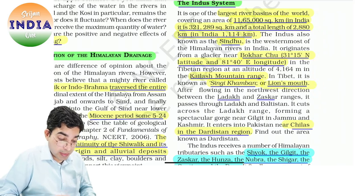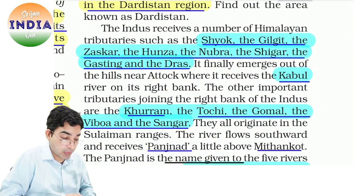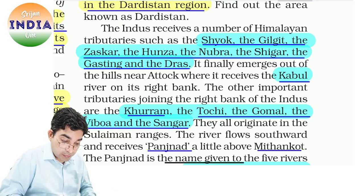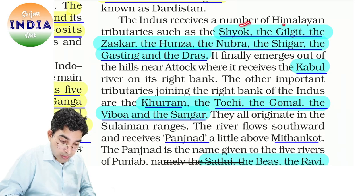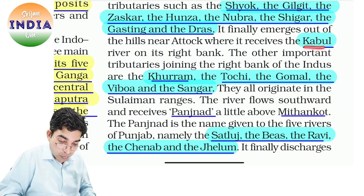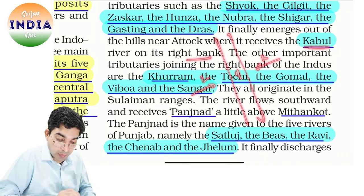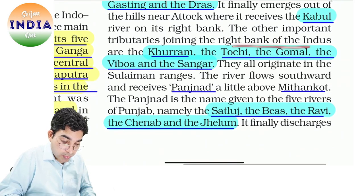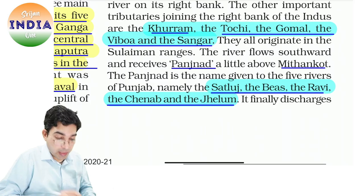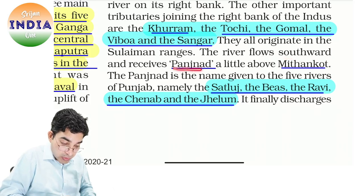Ek paragraph mein kitna saara content hai aur isse kitne MCQs ban sakte hain — NCRT bahut concise aur content rich hai. Indus receive karti hai Himalayan tributaries — Shyok, Gilgit mein, Zaskar, Hunza, Nubra, Shigar, Gasting aur Drass. Finally ye emerge karti hai, Attock pe receive hoti hai Kabul river — right bank mein. Banks bhi pata hai — right bank idhar se hai to left bank udhar. Other important tributaries joining the right bank: Khurram, Tochi, Gomal, Vibowa, Sangar — ye sab Sulaiman ranges se originate hoti hain.